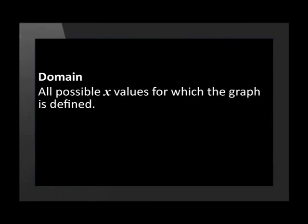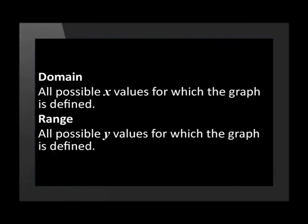The domain is defined as all the possible x values for which the graph is defined. And the range is all the possible y values for which the graph is defined. The domain is all possible x values for which the graph is defined, and the range is all possible y values for which the graph is defined.